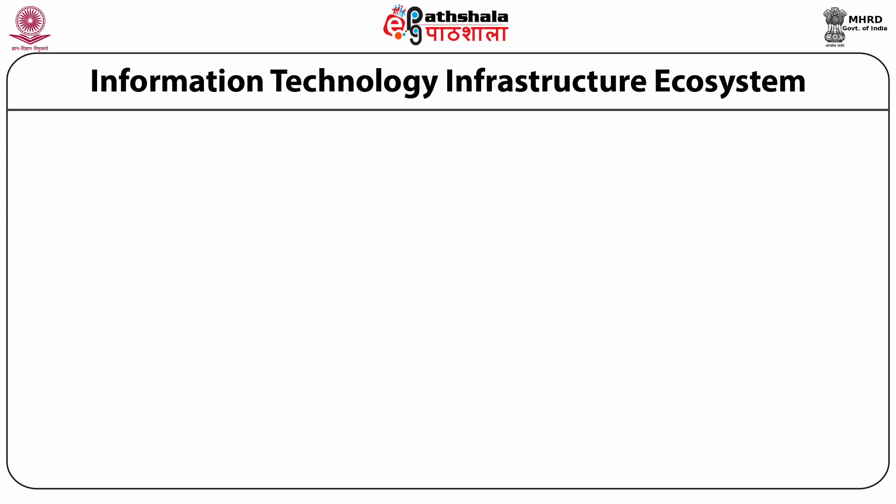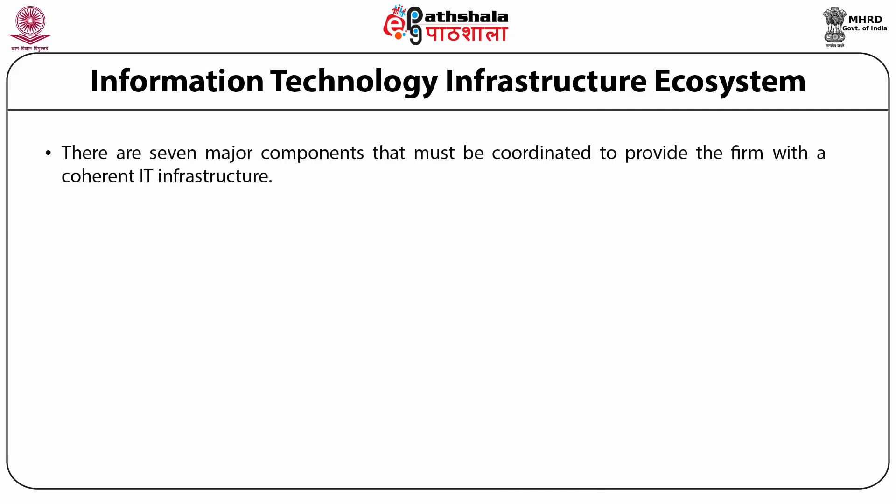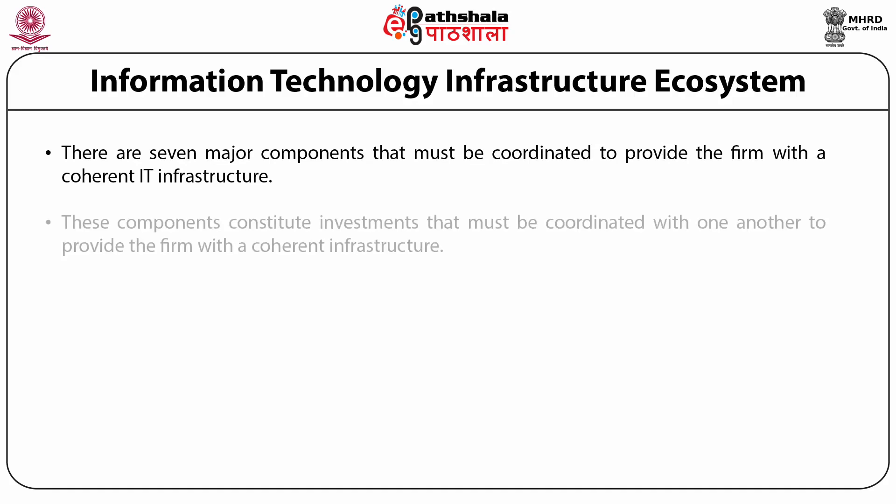Let us now focus on the information technology infrastructure ecosystem. There are seven major components that must be coordinated to provide the firm with a coherent information technology infrastructure, and these components constitute investments that must be coordinated with one another.